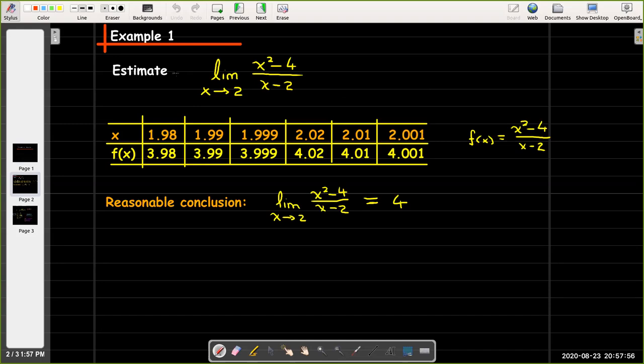So let's try to estimate the value of the limit as x approaches 2 of x squared minus 4 all over x minus 2.